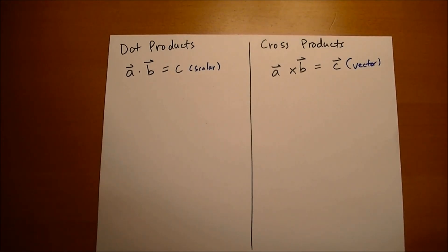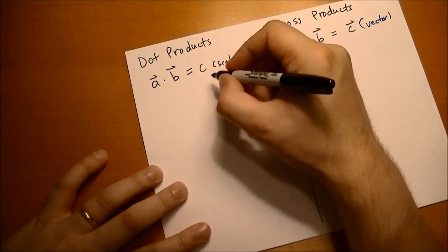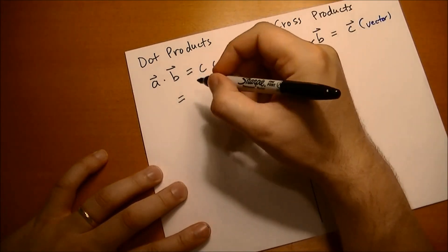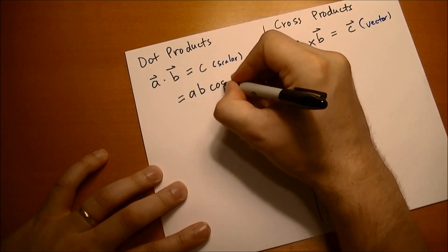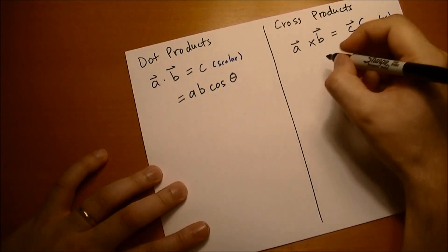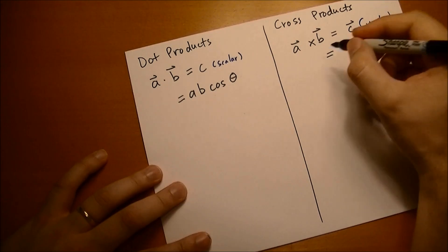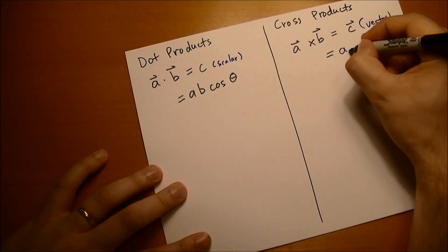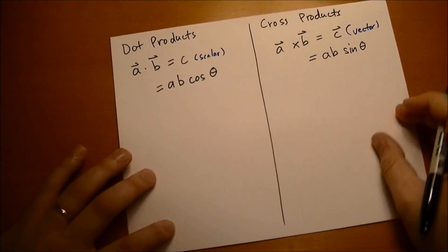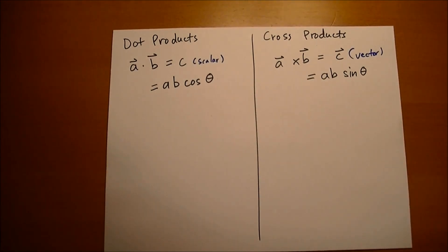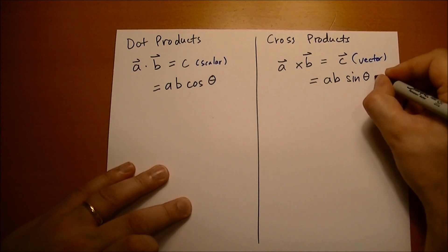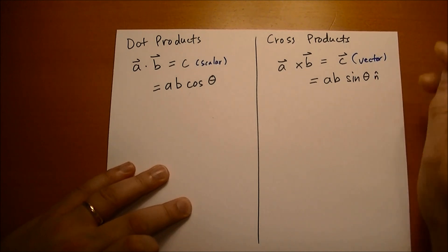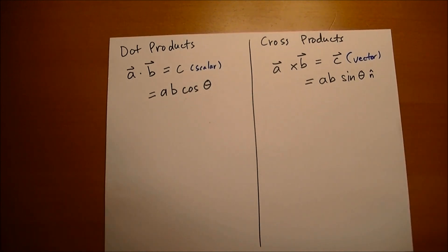The second thing to remember is that when you dot product, the scalar is a b cosine theta. Whereas the length of the cross product is a b sine theta. So you see how similar these are? The only difference is that since it's a vector, you need some kind of n hat for the normal. We'll talk about that in a second.